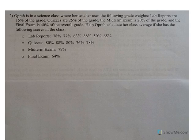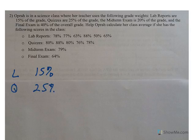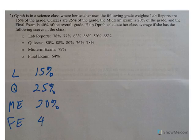Number two. Oprah's in a science class where her teacher uses the following grade weights. Okay, so we have labs are 15%. These are the weights. Quizzes are 25%. Midterm exam is 20%. And then the final exam is 40%.